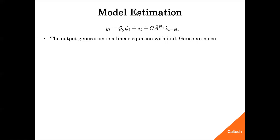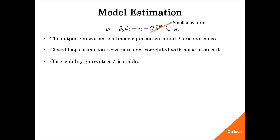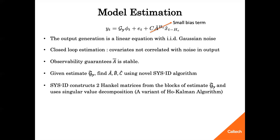With this reparametrization, covariates are not correlated with noise in the output. Furthermore, the observability of the underlying system guarantees that A bar is stable. So, for large enough h, the last term provides a negligible bias. Therefore, by solving the proposed least squares problem, we get a reliable estimate of G_Y.